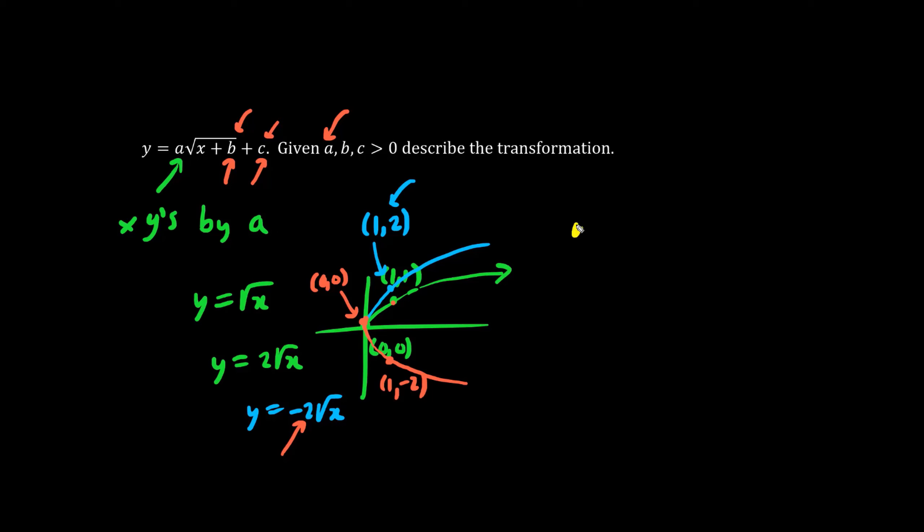So if, for example, we had Y equals, we'll just make A 2, x plus 3 plus 1. We have the B value of 3 and the C value of 1. Plus 3, a positive B value, means actually 3 units to the left.